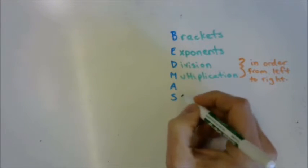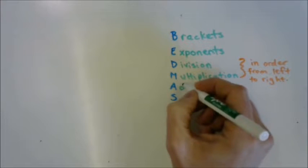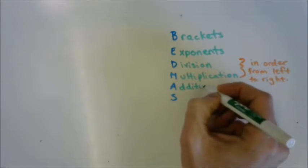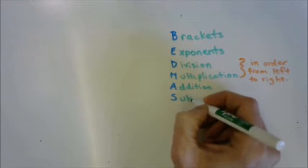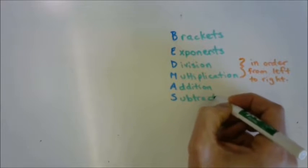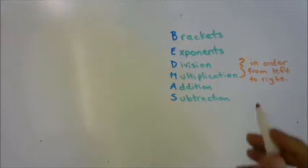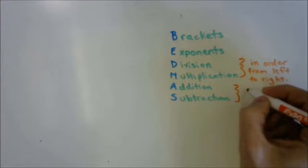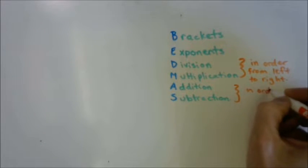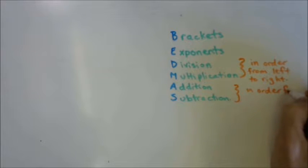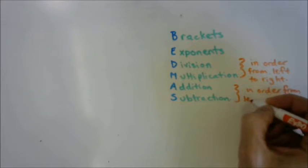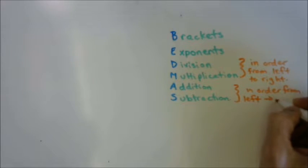And after we've taken care of division and multiplication, we move on to addition and subtraction. And the same rule applies there. We're going to do addition and subtraction in order from left to right.